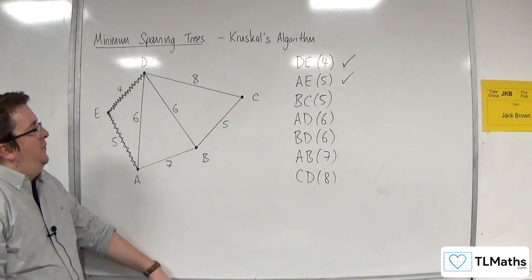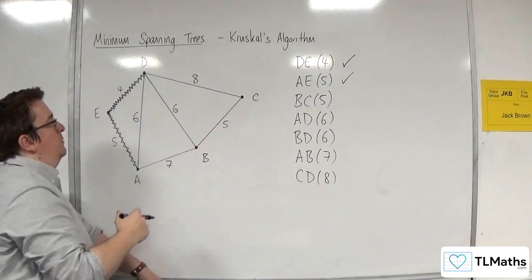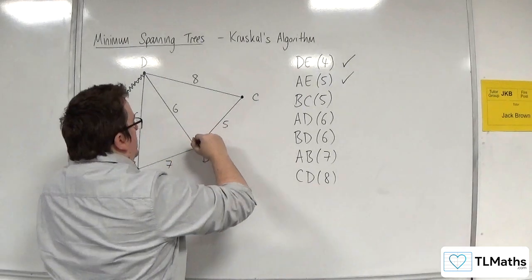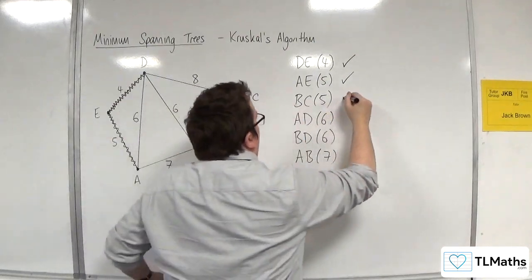Right, how about BC? So BC is next. So this one over here, does that create a cycle? Well, no, there's no cycle yet. So I can have that one. That's all good.